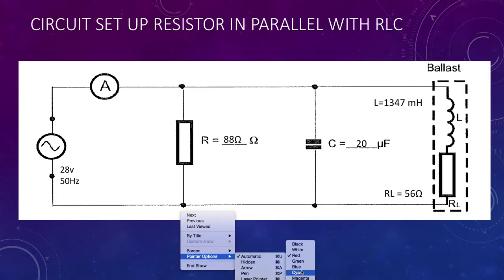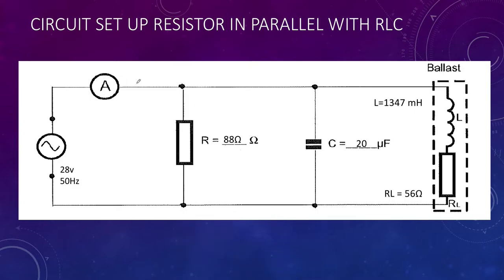We'll be measuring the supply current by putting on a clip-on ammeter. We'll do the same to measure the current in the resistive branch, similarly in the capacitive branch, and then finally in the inductive branch. Our resistor is about 88 ohms, capacitor is 20 microfarads, and our inductor is 1300 millihenries with an internal resistance of 56 ohms. We've got about a 27-28 volt AC power supply running at 50 hertz.